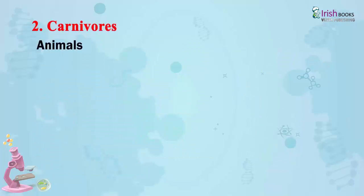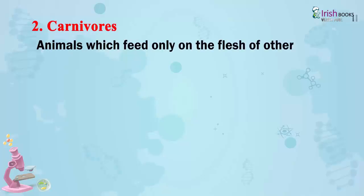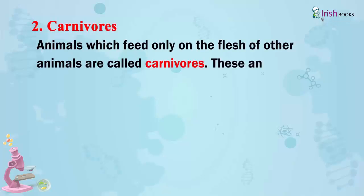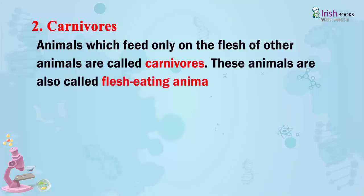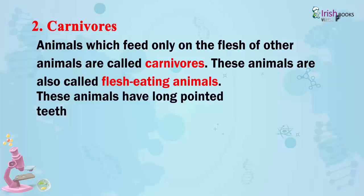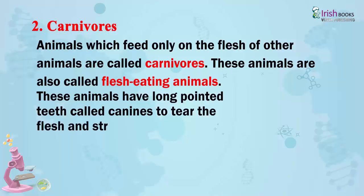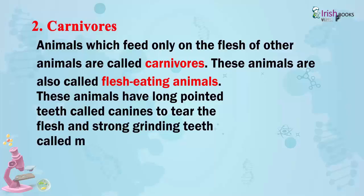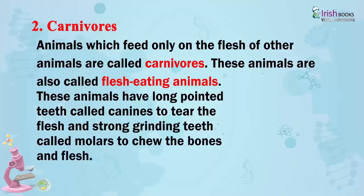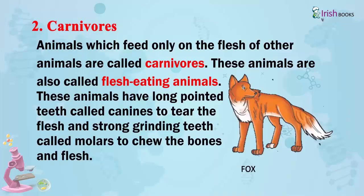Carnivores. Animals which feed only on the flesh of other animals are called carnivores. These animals are also called flesh-eating animals. They have long pointed teeth called canines to tear the flesh, and strong grinding teeth called molars to chew the bones and flesh.